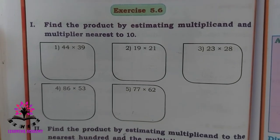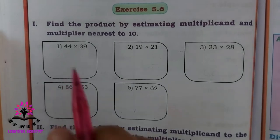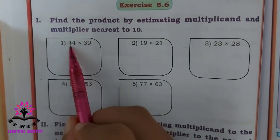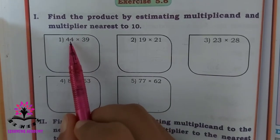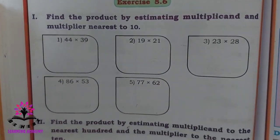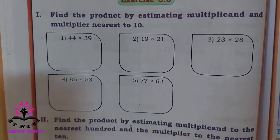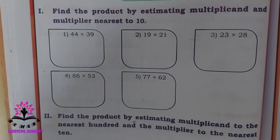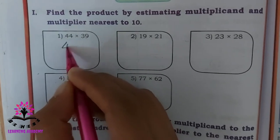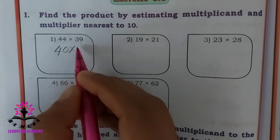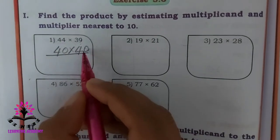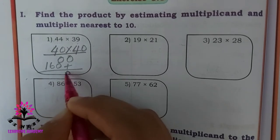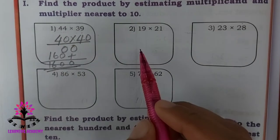Here two numbers are given — the multiplier and the multiplicand. You have to find the nearest value to the tens place, like 10, 20, 30, 40, 50, 60, and so on. For example, if you consider 44, the nearest tens value is 40. If you consider 39, the nearest tens value is also 40. So 40 times 40 equals 1600.